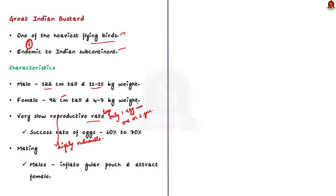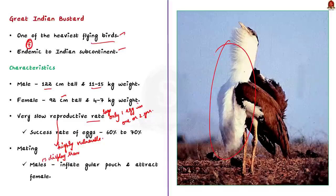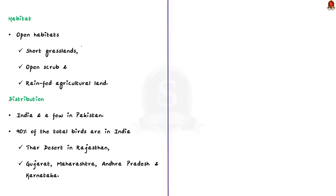During the mating period, males display themselves to attract females using a gular pouch, which they inflate to produce a resonant booming mating call audible up to 500 meters away. The Great Indian Bustard inhabits open habitats like short grasslands, open scrub, and rain-fed agriculture, breeding in traditionally selected grasslands. More than 90% of the total birds in the world are in India, with the largest number found in the deserts of Rajasthan. A few birds are also found in Gujarat, Maharashtra, Andhra Pradesh, and Karnataka.